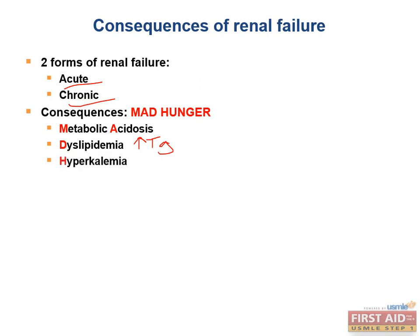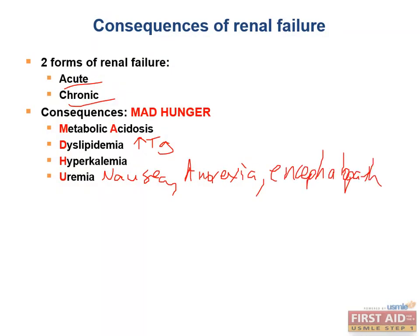Patients also have hyperkalemia due to the inability to excrete potassium ions. And as BUN and creatinine fail to be excreted, patients develop uremia, which is a syndrome marked by nausea, anorexia, encephalopathy, asterixis, and platelet dysfunction.